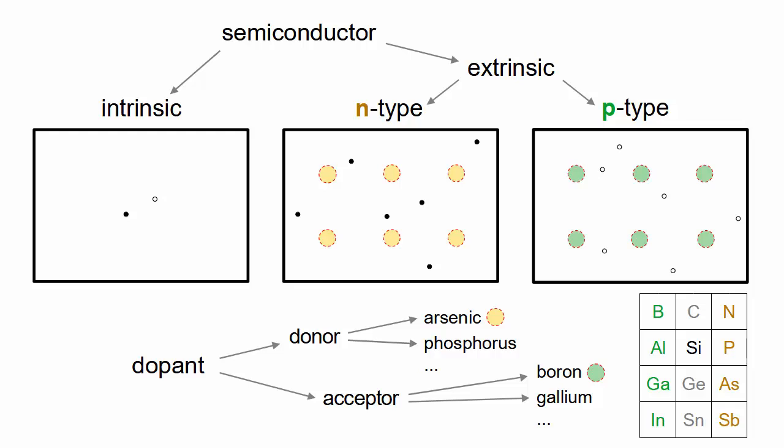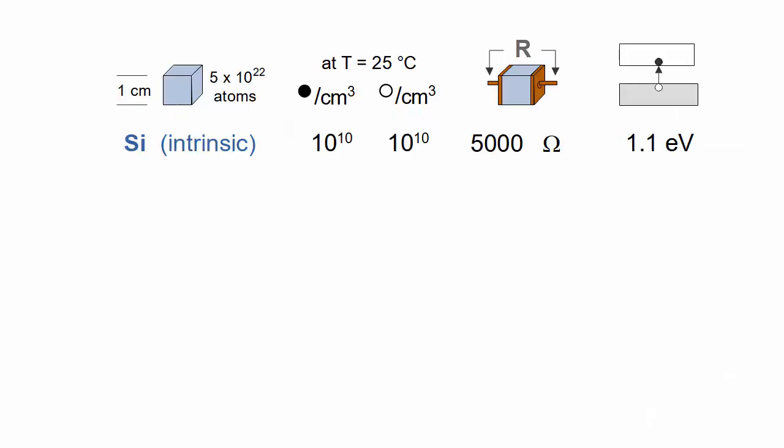Now let's look at silicon properties. A 1 centimeter cube of pure intrinsic silicon contains 5 times 10 to the 22 atoms. At room temperature, about 1 in a trillion atoms are ionized, resulting in 10 to the 10 mobile electrons and 10 to the 10 holes. Both kinds of particles can carry an electric current. The resistance between two opposite faces of the cube is 5,000 ohms.